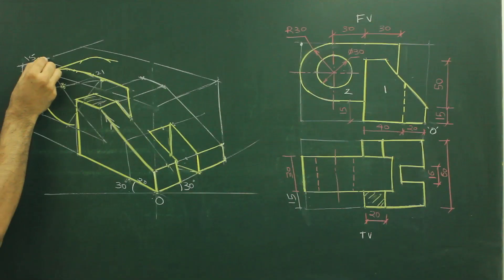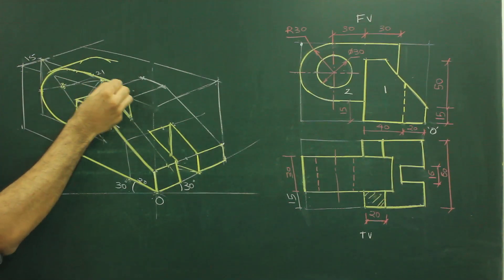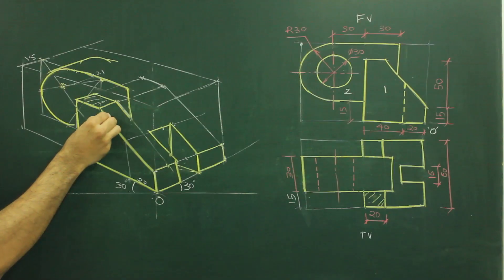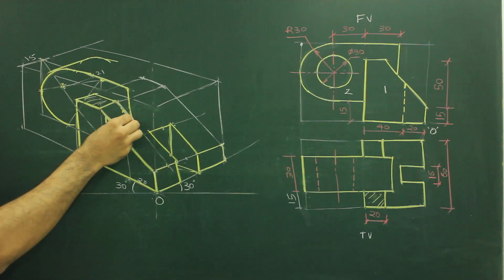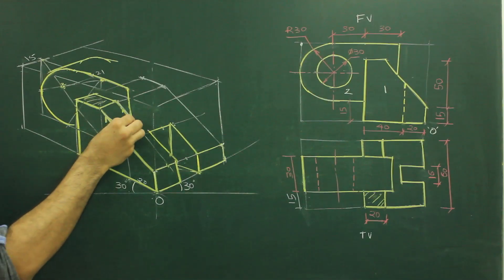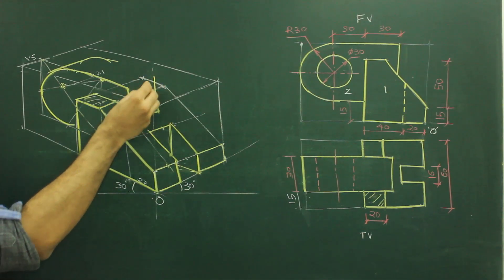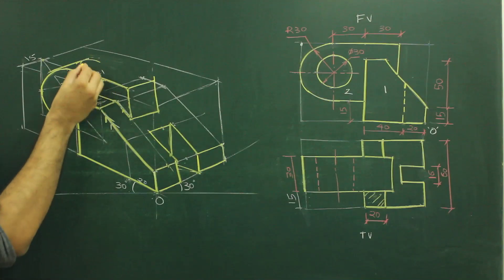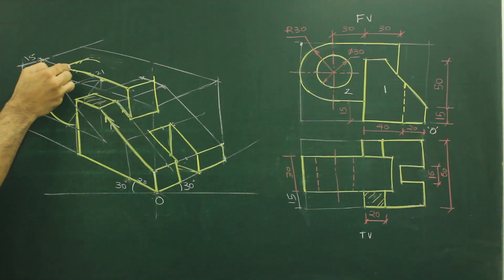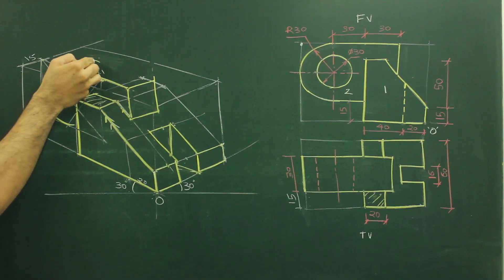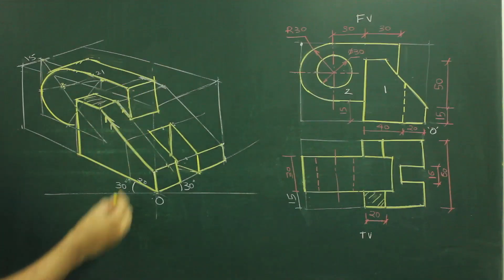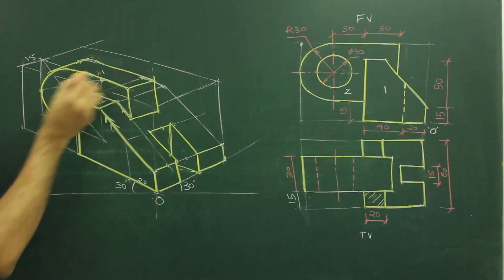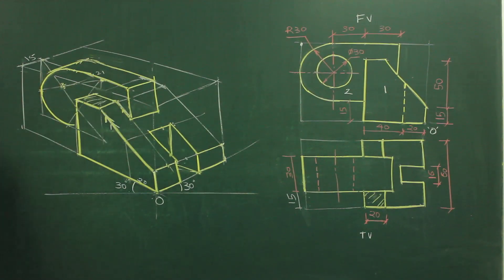From here I took 90 (that is 30 plus 30 plus 30), went straight down, then went inside by 15, drew a parallel line, and wherever they intersect is the point. From that point we go inside by 30 and draw the line. After that, taking the radius, going behind by 13, drawing the radius, and from that point we draw a straight line. We get a surface like this, and we are done with this part.